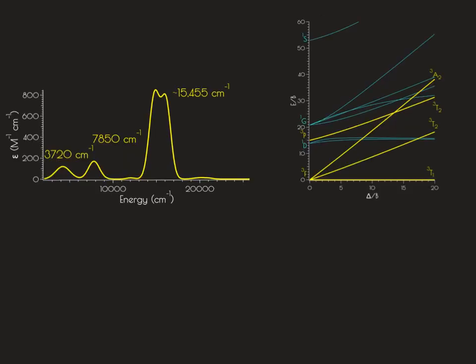We can now go through and assign these features in the electronic absorption spectrum. All of these transitions originate from the ground state triplet T1 term. Here, what we have is a transition from our triplet T1 up into the triplet T2 state originating from the F free ion term.